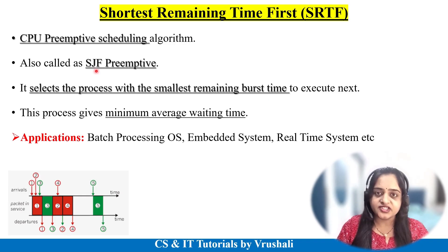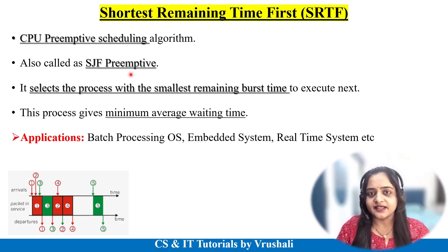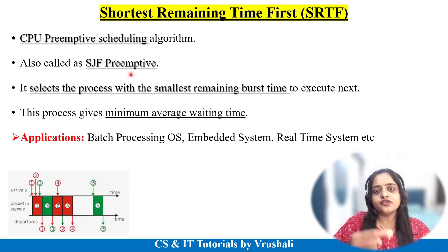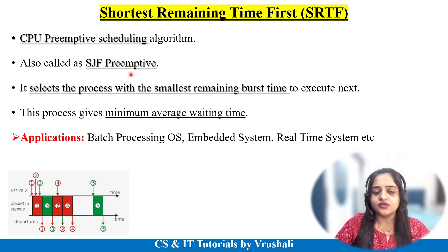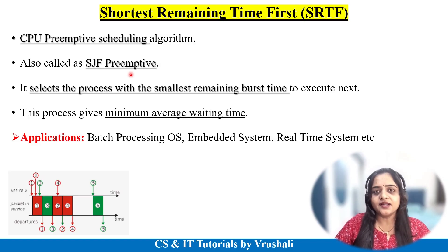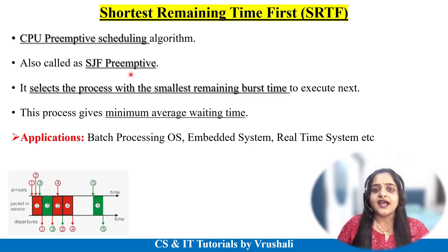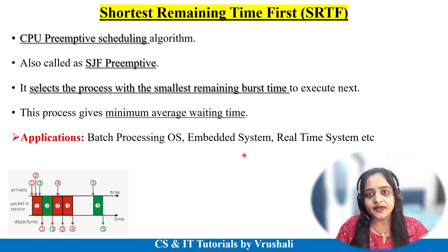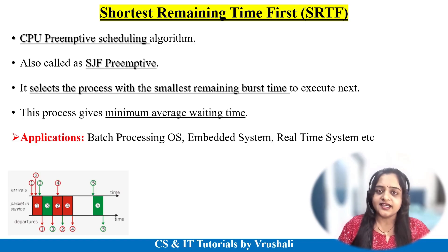SRTF follows the rule of SJF, but it is in a preemptive manner. Preemptive manner means the CPU executes P1 for one unit of time, then executes P2 for one unit of time — in this way, they serve multiple processes parallelly and equally. This concept of the SRTF algorithm is generally used in some batch processing operating systems, some embedded systems, or in some real-time systems. Now let's see how to solve the examples.